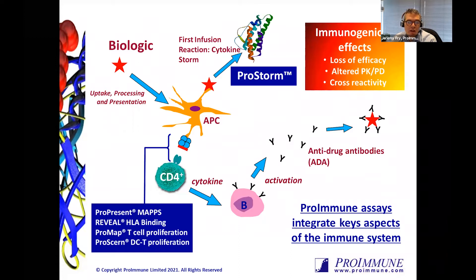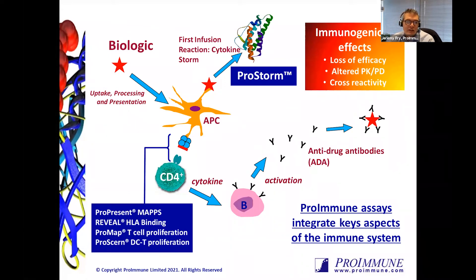MHC peptide complexes on the surface of the APCs are then presenting to CD4-positive helper T cells. This very specific interaction is what's required to then stimulate the adaptive arm of the immune response. If the cognate interaction occurs between your helper T cell and the MHC peptide complex, along with appropriate co-stimulation and other signals, then these CD4 T cells will become activated, they'll produce cytokine, they'll proliferate, and that can then drive your B cells to become potent antibody-secreting plasma cells.